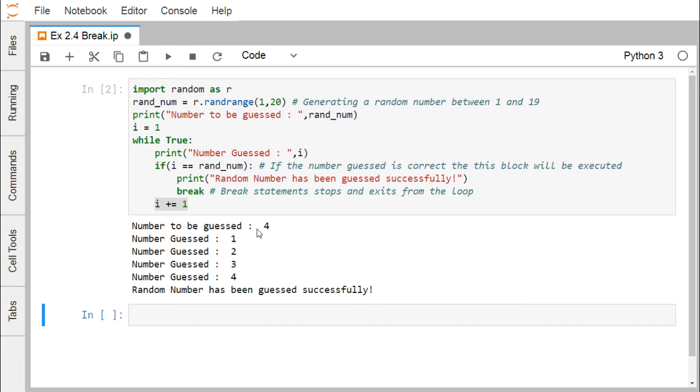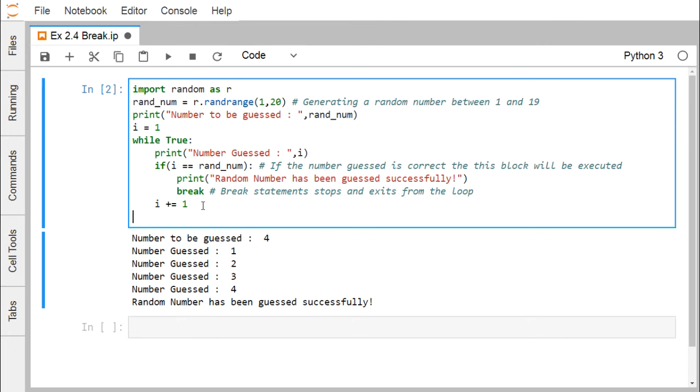Here you can find that the number which has been guessed in between 1 to 19 is 4. The loop has got executed for i equals 1, 2, 3, and 4. When 4 is equal to random and random is also containing 4, the condition is true. We are just coming out from this while construct after printing this line: random number has been guessed successfully, and then we are exiting from this while.